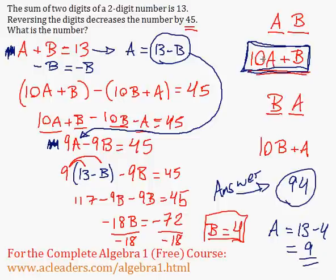So 10 times A, A is 9, so 10 times 9 is 90, plus B, B is 4, so 94. That's it.